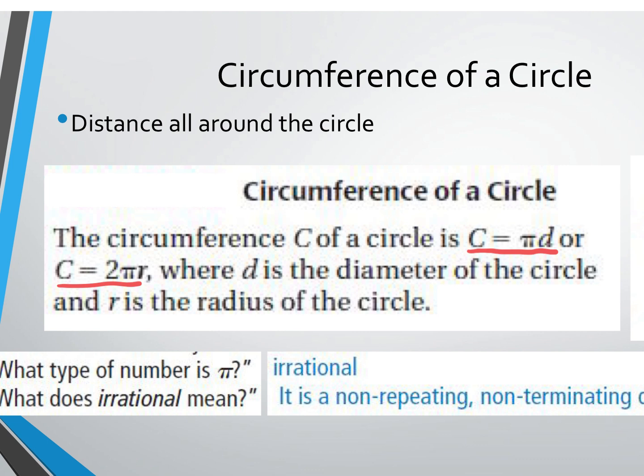Those are the exact same formula. Does anyone know why? The radius equals half the diameter. If you multiply the radius by 2, you're just dealing with the diameter. So you only need to know one of them, and you can automatically get the other. Pi times the diameter is the circumference, or 2πr.